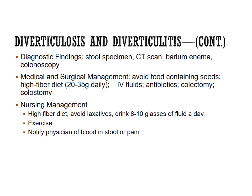Tell the patient to eat a high-fiber diet, avoid laxatives, and drink 8 to 10 glasses of fluid a day. We avoid laxatives because overuse causes rebound constipation. It's better to use natural options like prunes or green leafy vegetables. Increasing exercise helps GI motility. Notify the physician if there is any blood in the stool or abdominal pain.